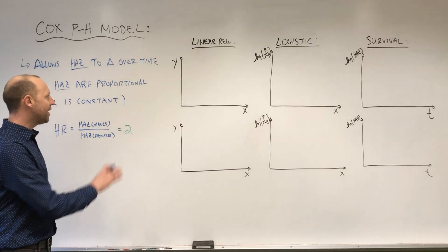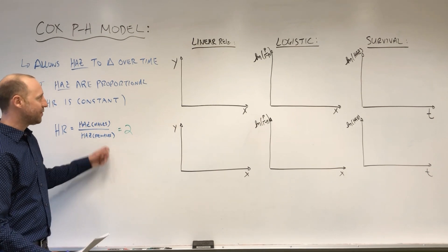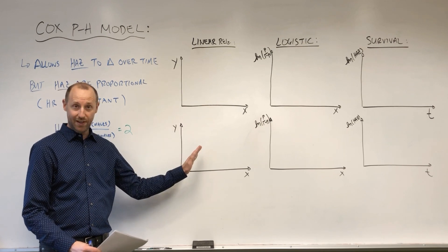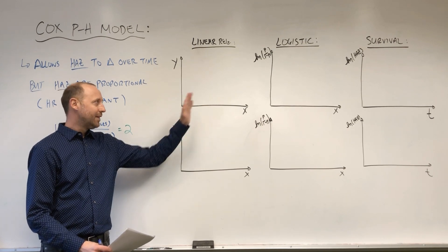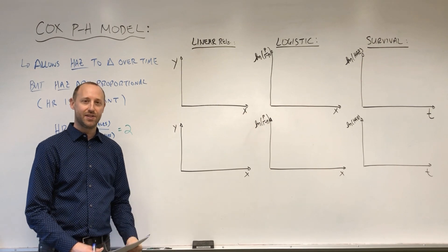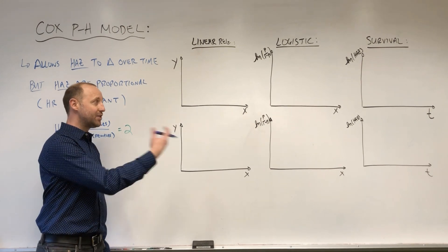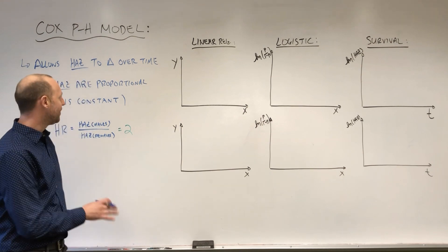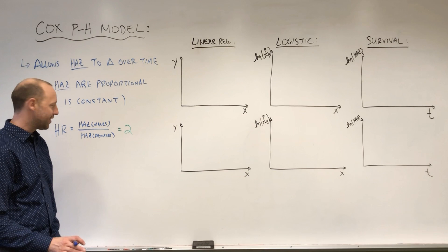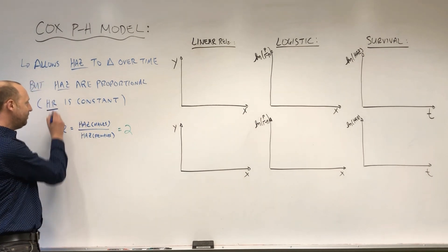To build up the idea of what proportional hazards or constant hazard ratio means, I want to go back to ideas from linear regression, then what they look like in logistic, and then how that translates to survival. We're taking knowledge we've already built and transferring it into survival to understand what proportional hazards means — or, the way I find it easier to think about it, that the hazard ratio is constant.